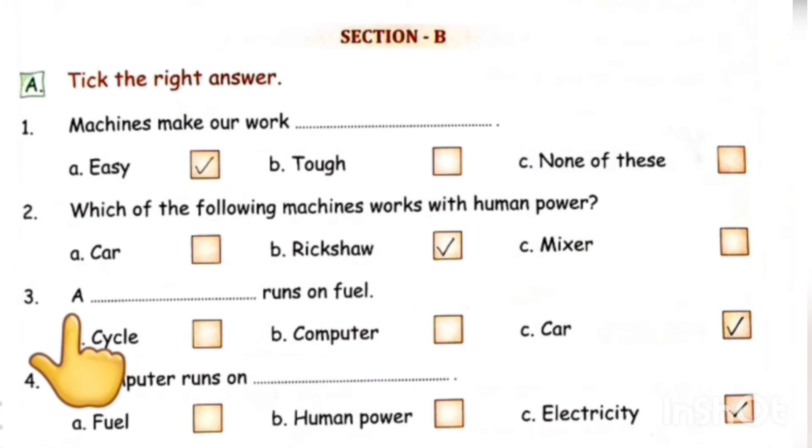Now, let's read the next question. A dash runs on fuel. A dash runs on fuel. Fuel te kaun chalde lehi? Option A, cycle. Option B, computer. Option C, car. Correct option is car. A car runs on fuel.